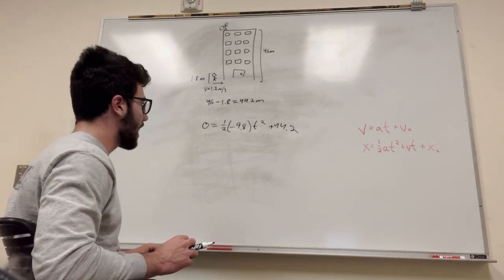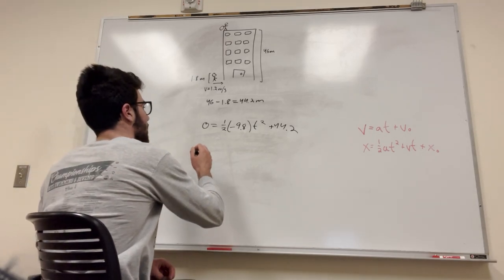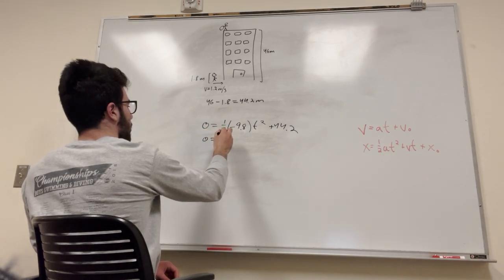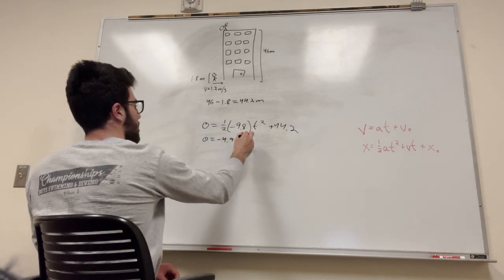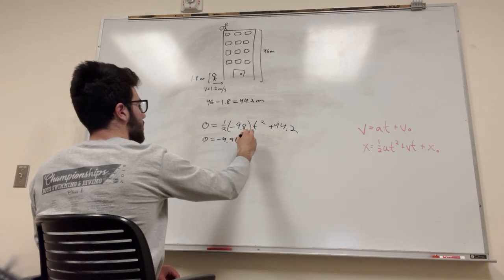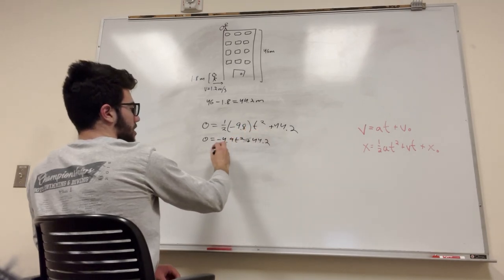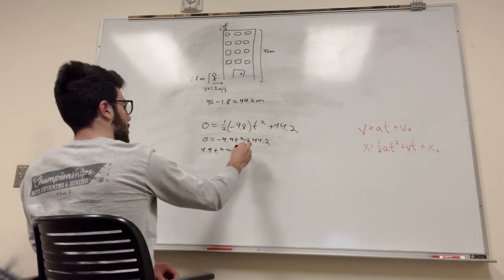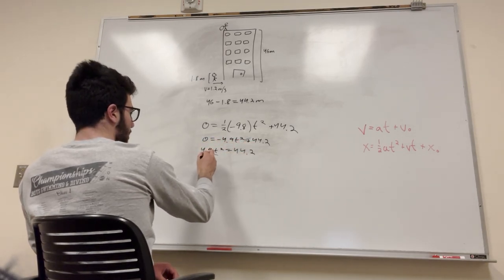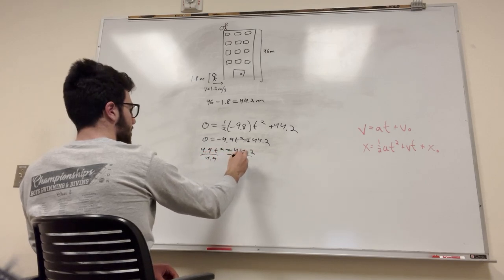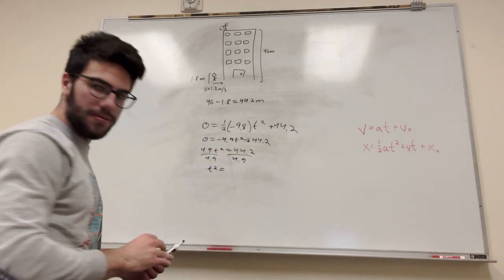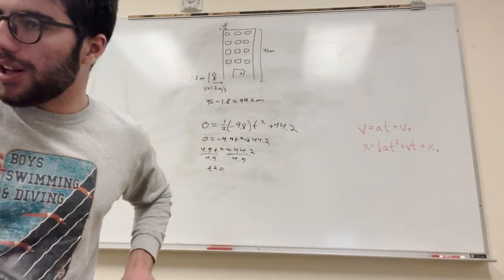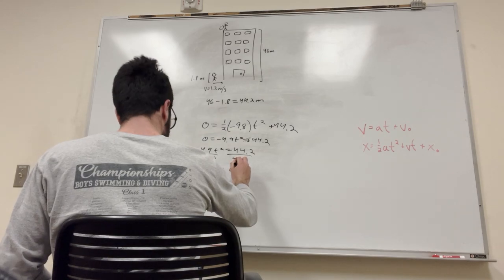Let's find out what T is equal to. To do this, we're going to want to first simplify. Negative 4.9 T squared is equal to 0 plus 44.2. We're going to subtract or add this to both sides. So, 4.9 T squared is equal to 44.2. Divide by 4.9 on both sides, and you're going to get T squared is equal to... Oh shoot. I don't actually have this problem pre-solved.